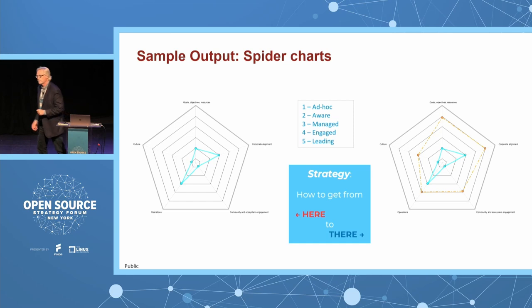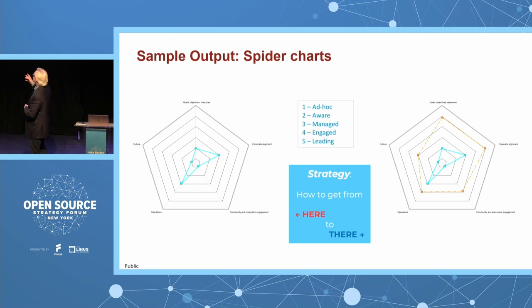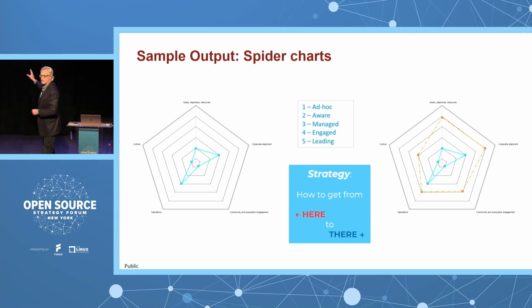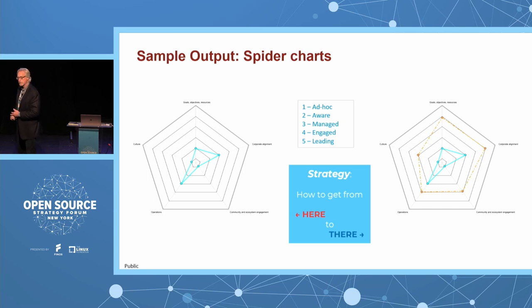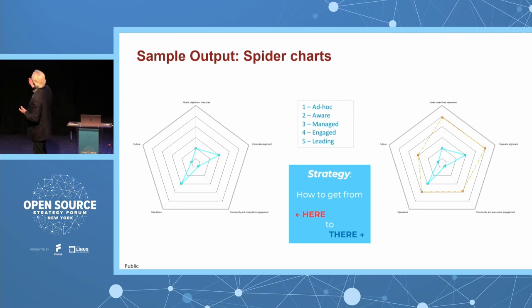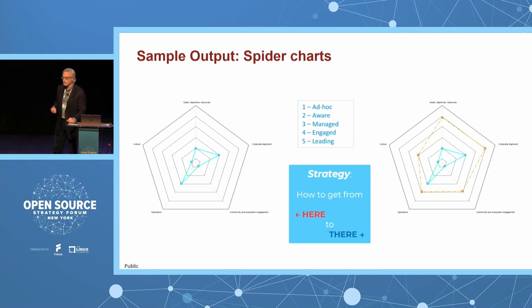One of the other outputs is spider charts. These spider charts show against each of the different elements of the dimensions where you are. On the left-hand side, it shows where you are today. Based on going through the current state analysis, you've identified where you want to get to. The goal for your organization may not be to get to that last stage — the leading stage — either because it's not necessary, your goals and objectives don't require it, or you simply don't have the resources. You may decide in one area you do want to get to that stage, while in others it's perfectly fine to be in the middle. There's no universal right answer — it's based on your goals, your objectives, and your resources.